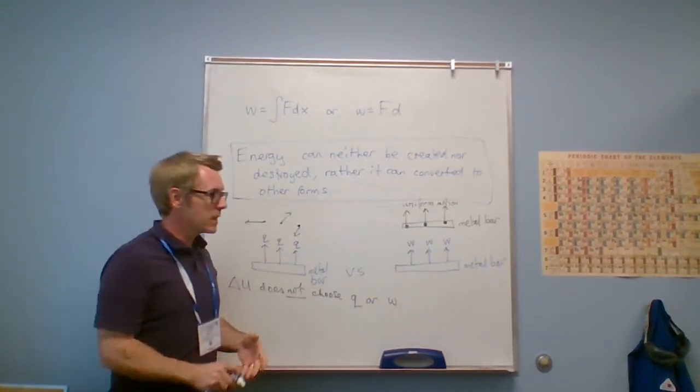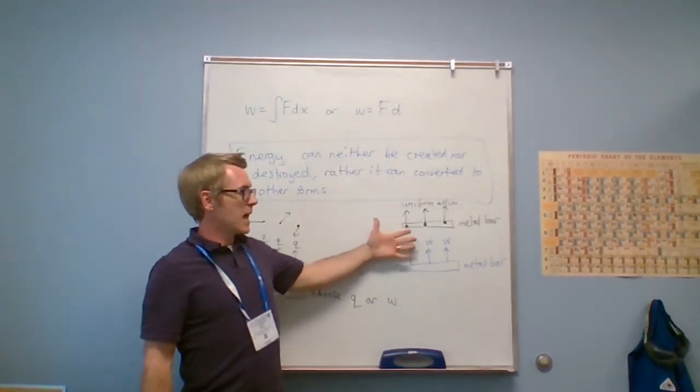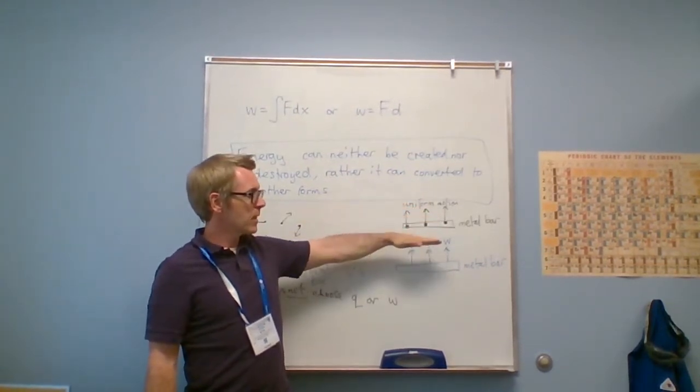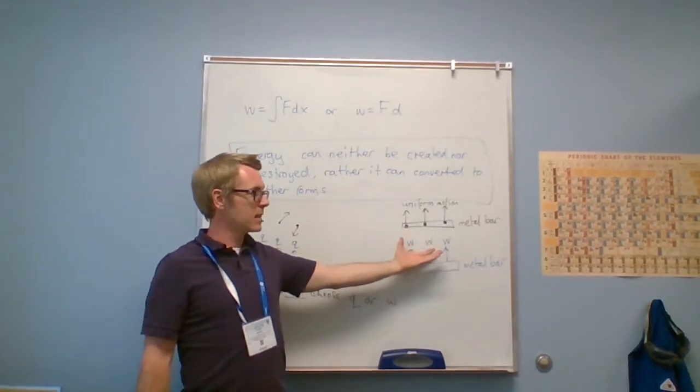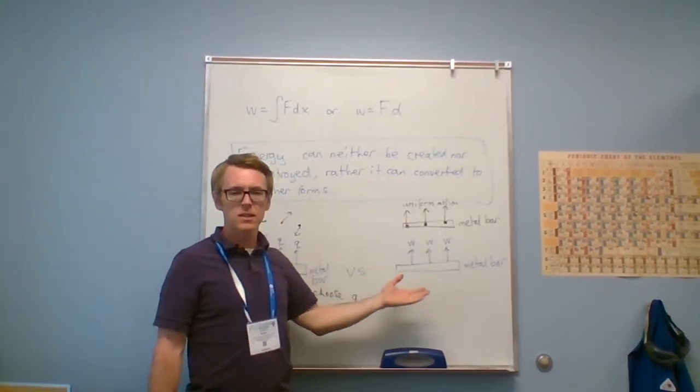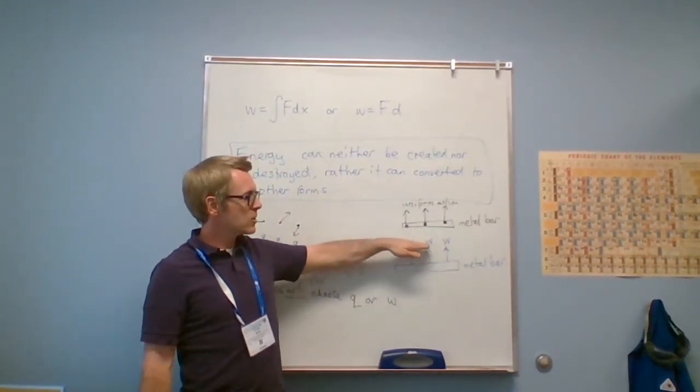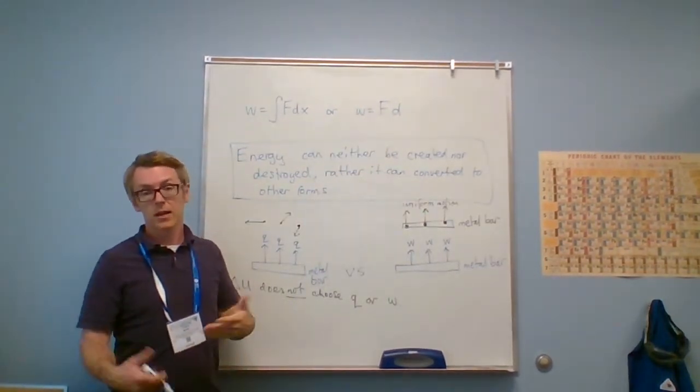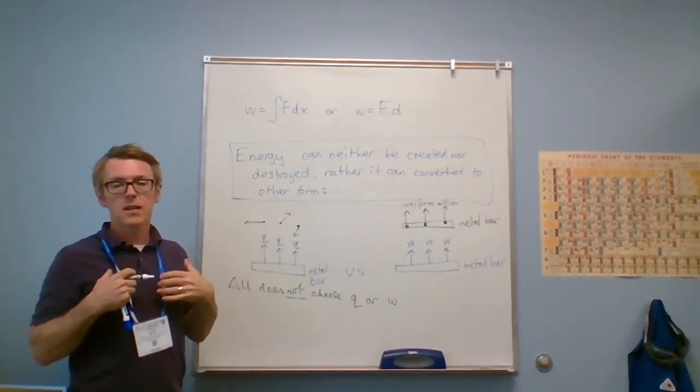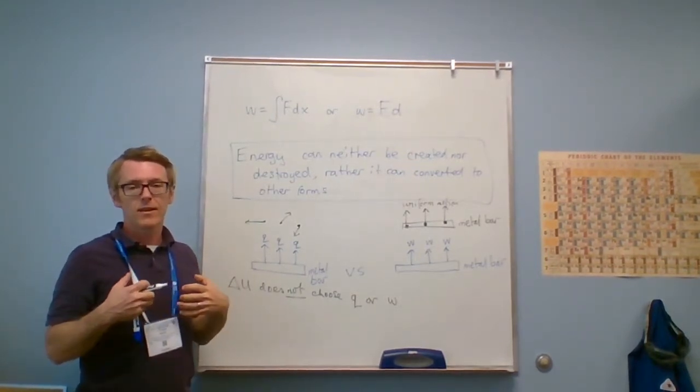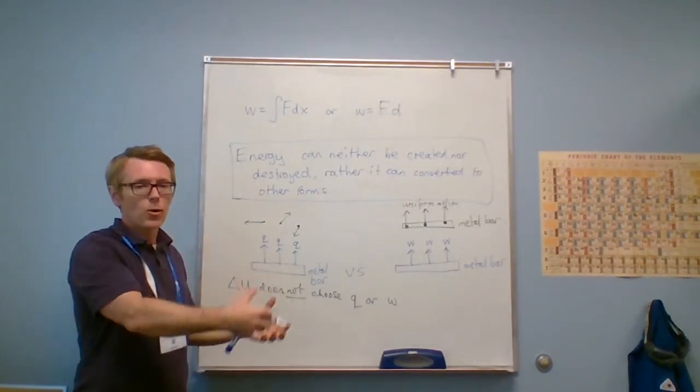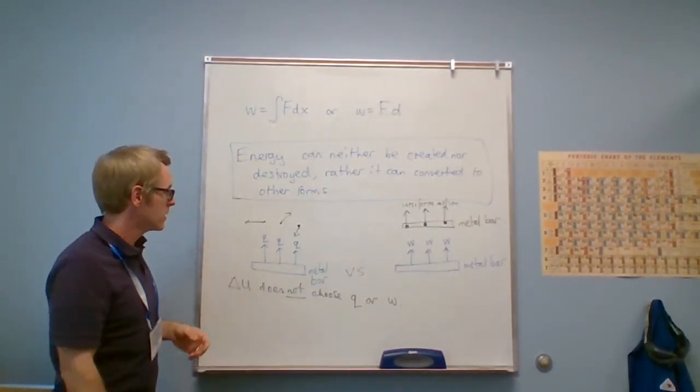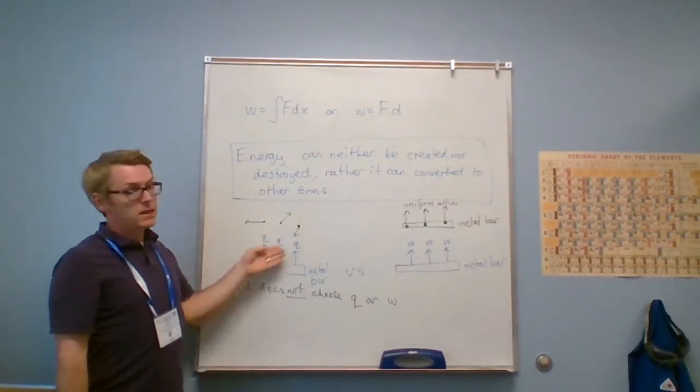For example, if I allow work to happen, if I have a piston and let's say this is a gas, I set up the conditions, set the stage so that work can be done on a piston and uniform motion of the piston can occur. However, I've set the stage for work so I will get what I enable. If I enable work to happen, potentially I can see work. If I don't have a piston, I won't see work.